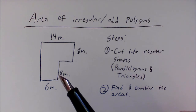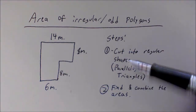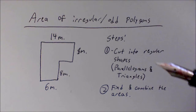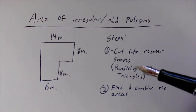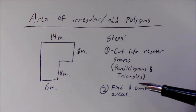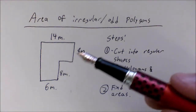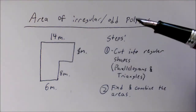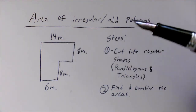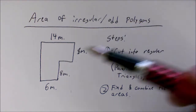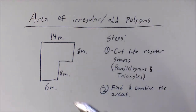For this example, we're going to follow these two steps. Step number one is to cut it into regular shapes, such as parallelograms and triangles. For a lot of shapes, they will give you certain measurements. For a few shapes, not necessarily all of them, there will be an easier place to cut than others.